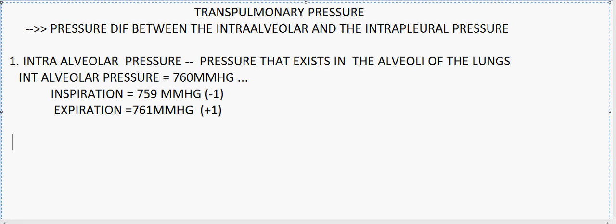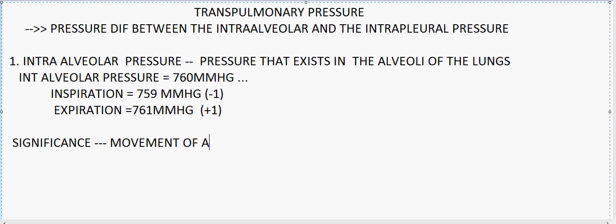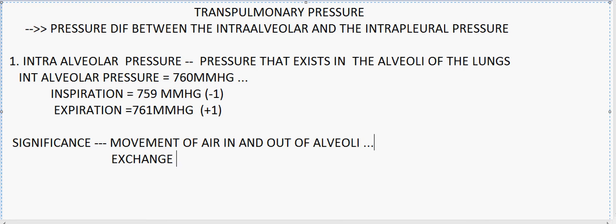The significance and importance of this intra-alveolar pressure is that it helps in the passage — the movement — of air in and out of the lungs. We also know the primary function of these alveoli: they help in the exchange of gases between the alveolar air and the blood.